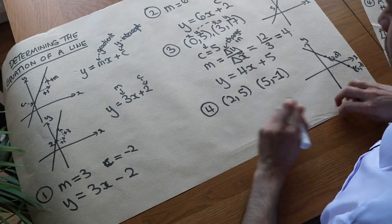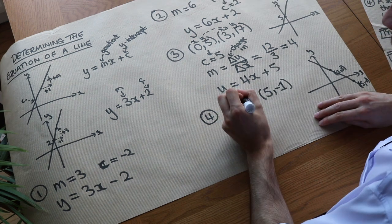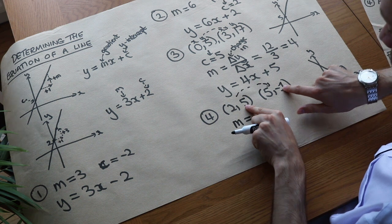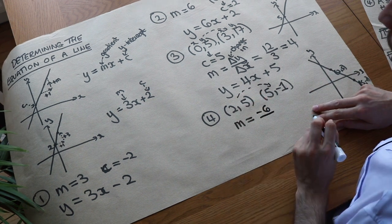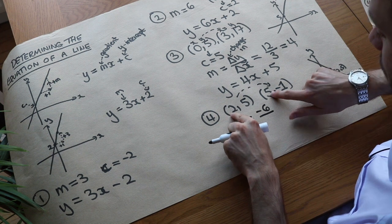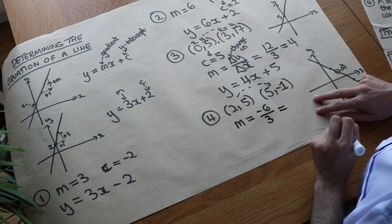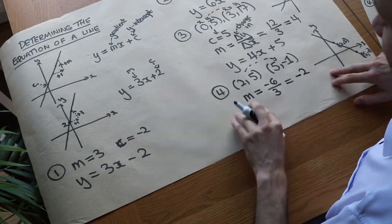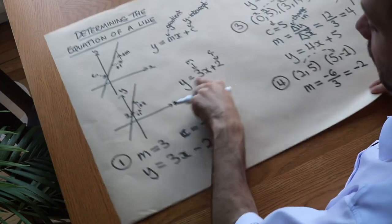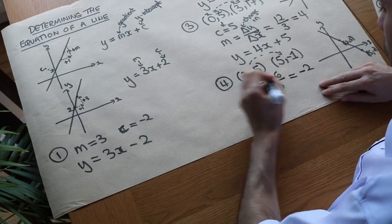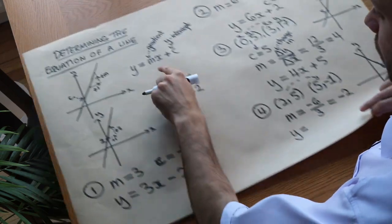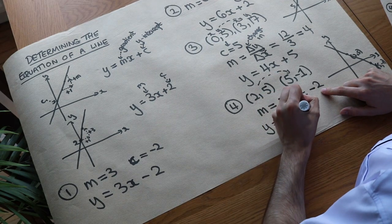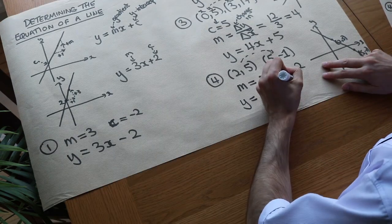We find the gradient first. m equals the change in y over the change in x. Going from 5 to minus 1 is minus 6, over the change in x from 2 to 5, which is 3. Minus 6 divided by 3 — negative divided by positive — is minus 2. So we can fill in part of the equation: y equals minus 2x plus c. But we don't know what c is yet.